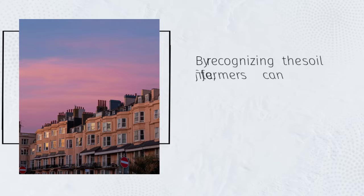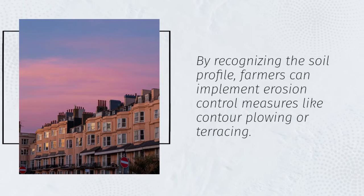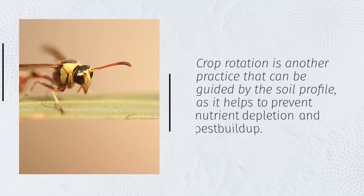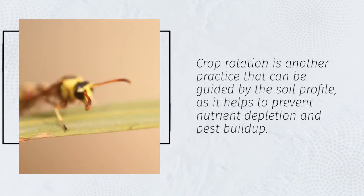By recognizing the soil profile, farmers can implement erosion control measures like contour plowing or terracing. Crop rotation is another practice that can be guided by the soil profile, as it helps to prevent nutrient depletion and pest buildup.